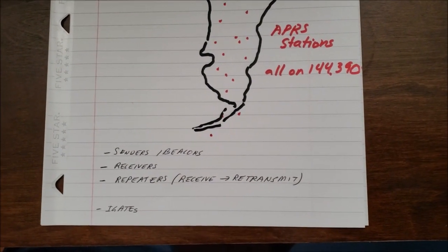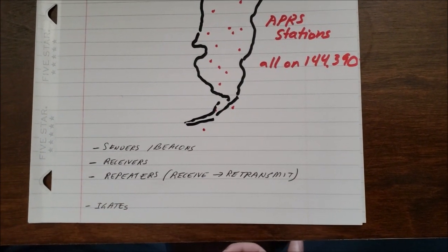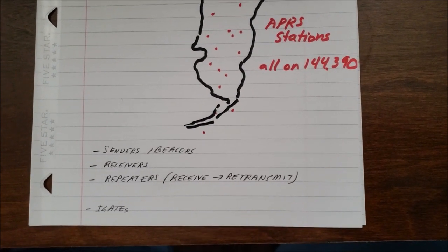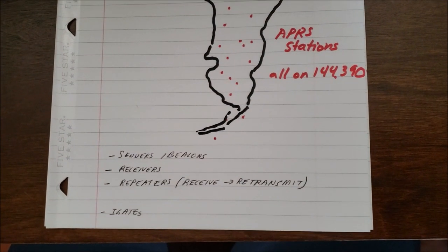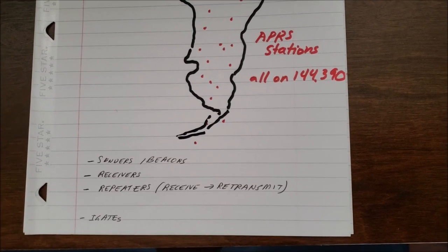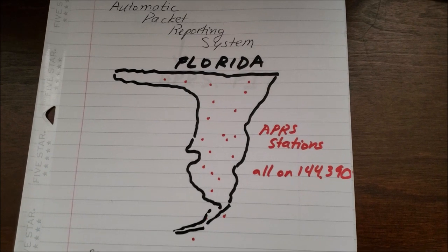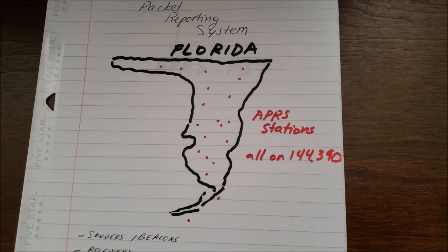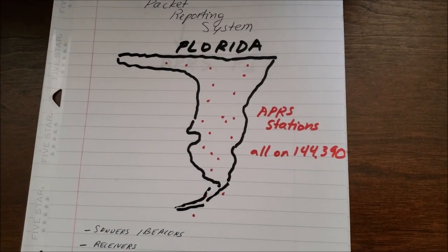The stations in the state can be pretty much anything — transmitters, beacons, receivers, and repeaters. Repeaters receive the signal and retransmit it. There are also special stations called iGates, which I'll get into in a couple of minutes. The bottom line is that there are lots of stations around the state, all tuned to the frequency, and they form a sort of network where they can pretty much receive any APRS signal.